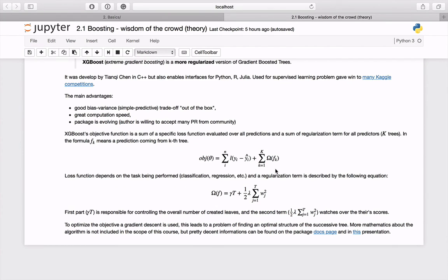Right here you can see general formula for objective function. It consists of a loss function plus regularization term. In XGBoost, the regularization term is expressed with this formula. Basically the first part is responsible for controlling the overall number of created leaves and the second term watches over their scores. If you are interested in more detailed mathematical explanation, please visit this linked page.